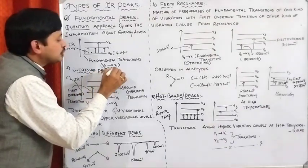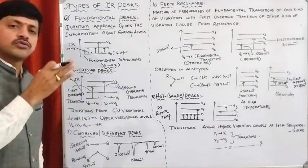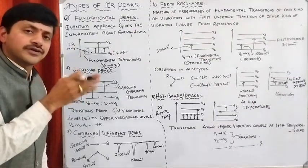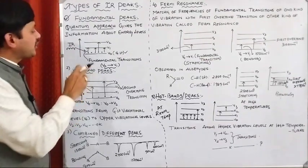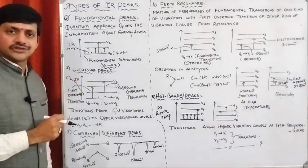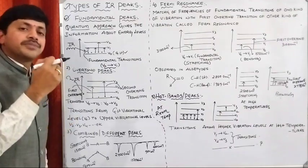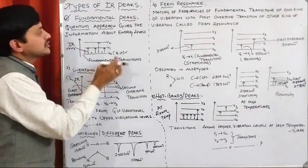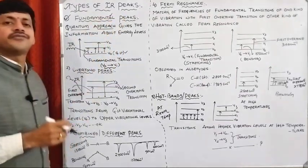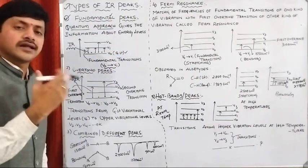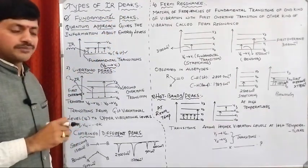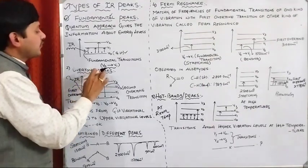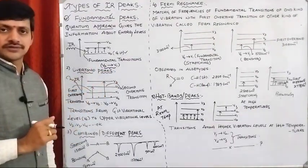The transition of a particle from the ground state vibrational level to the first vibrational level is commonly called a fundamental transition. The peaks arising due to fundamental transitions are commonly called fundamental peaks or fundamental bands. Simply put, fundamental peaks are peaks arising from the V0 to V1 transition.